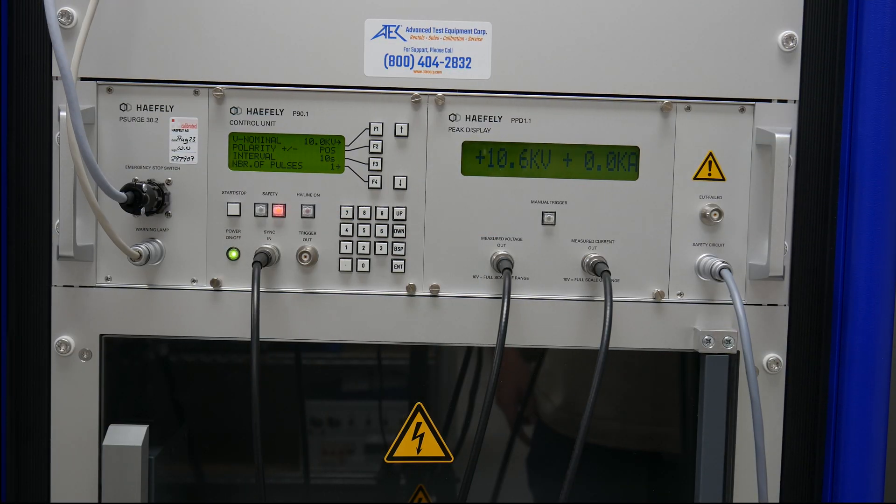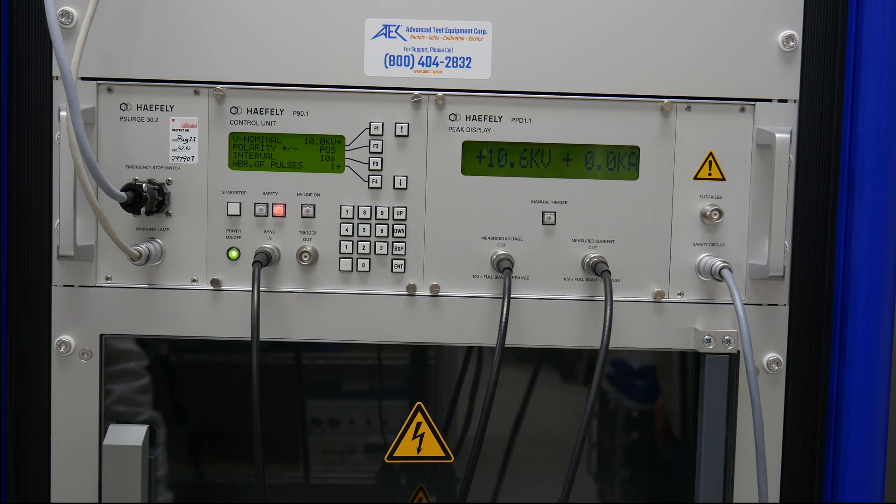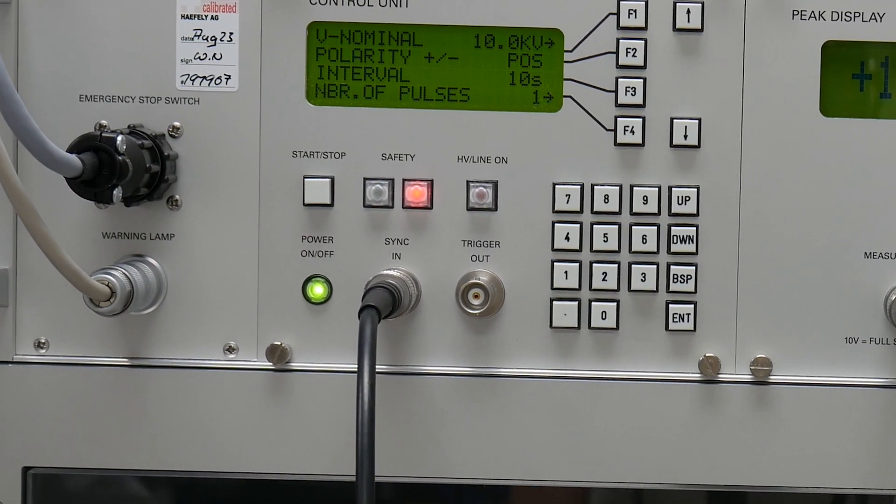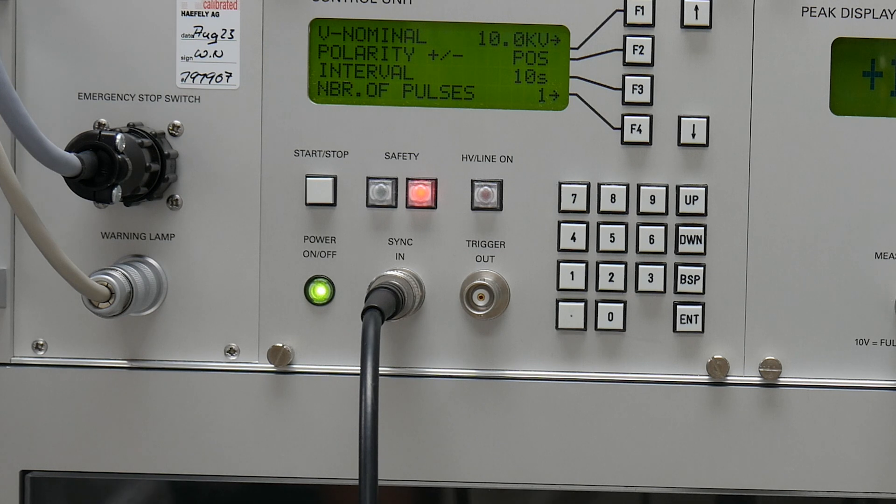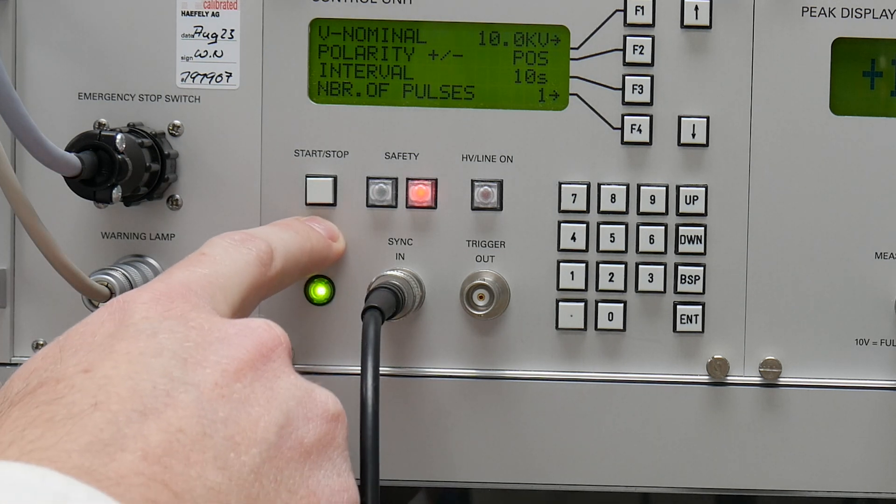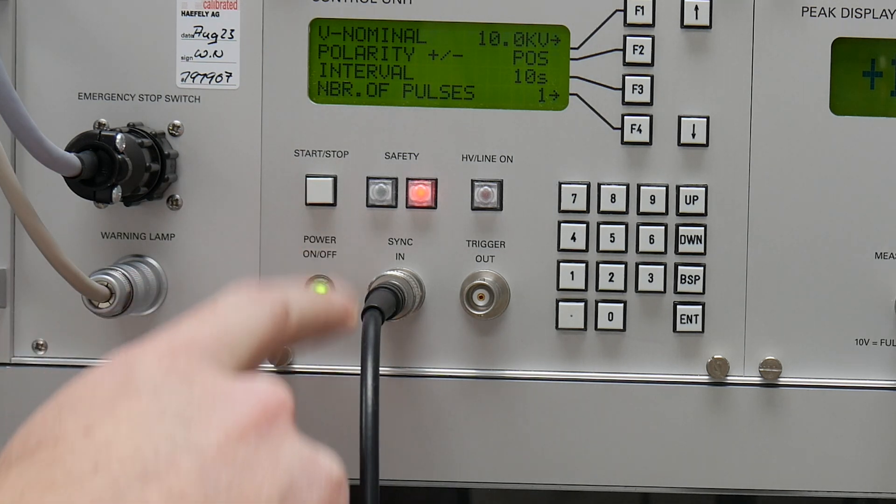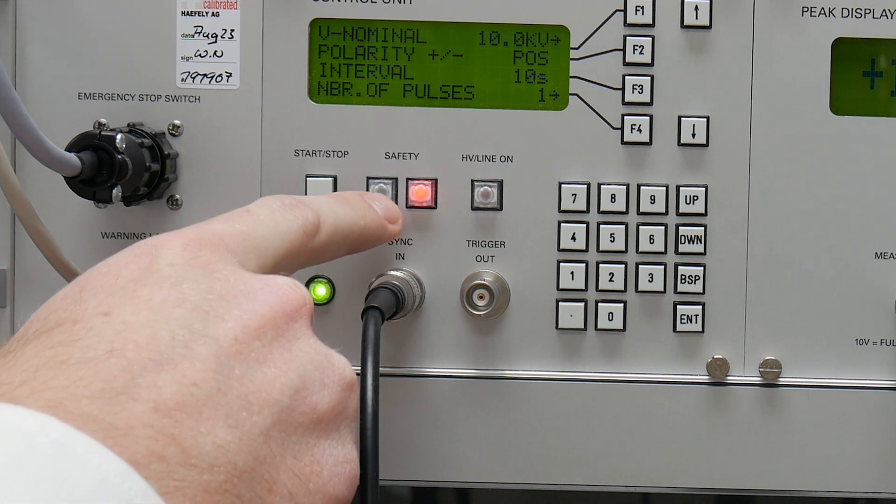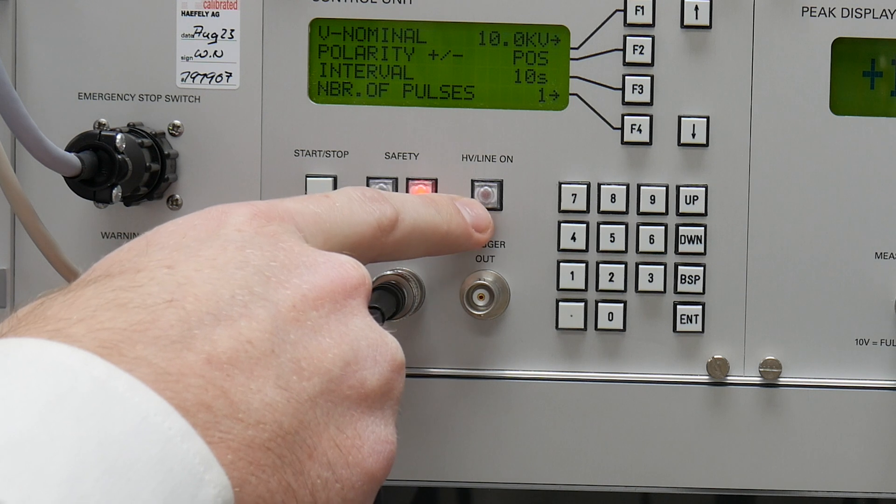In reviewing connections on the Haefeli P-Surge 30 we have the emergency stop switch and warning light which must be used before enabling a test. We have our start or stop test here as well as our power on off button. We have LED indicators here for the safety or high voltage line on.